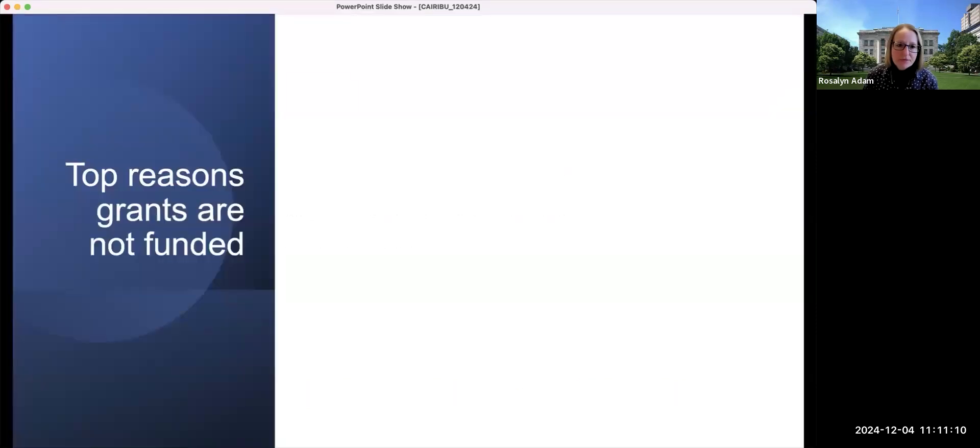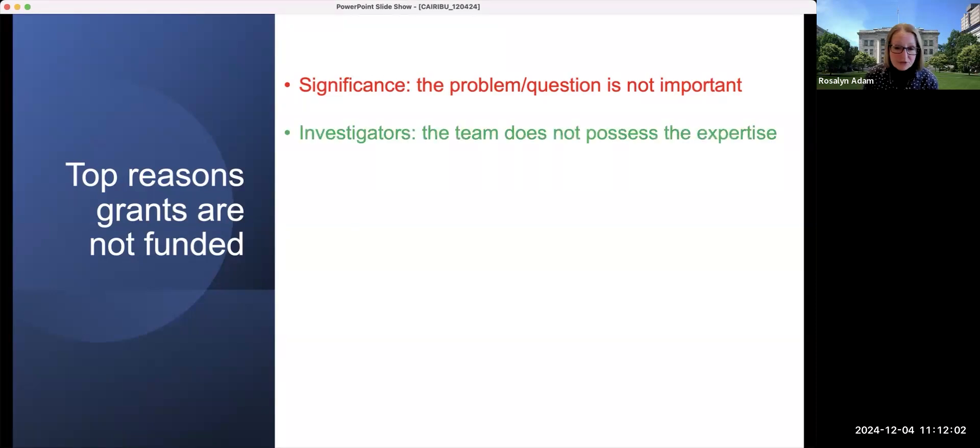So let's think for a moment about the top reasons why grants failed to either be scored or reach the funding pay line. And I've color coded these to illustrate some sense of how serious these are and how challenging it may or may not be to address them. So a major reason grants are not funded is that the question that they're addressing is not significant. So the problem or the question is not important. It is the opinion of the reviewers that addressing this question will only advance the field incrementally and will really not make a major impact. It will not be paradigm shifting. A potentially fixable reason that grants are not funded is the investigative team. So it does not possess the necessary expertise to carry out the study.